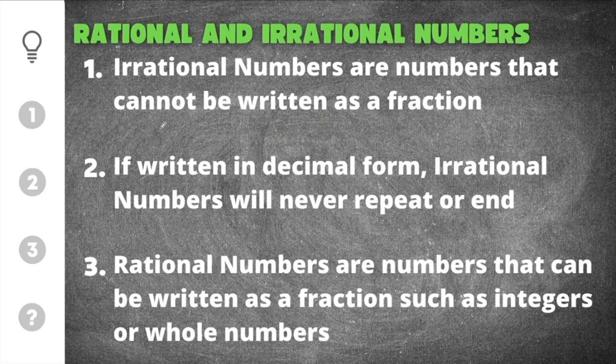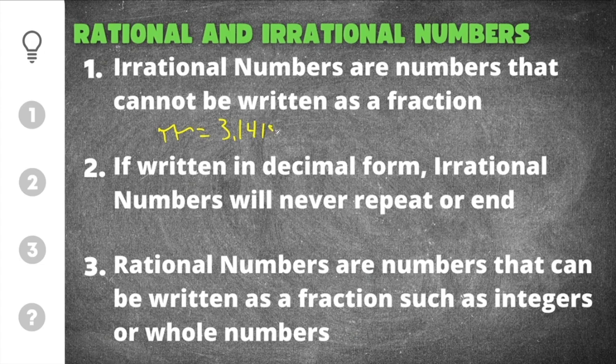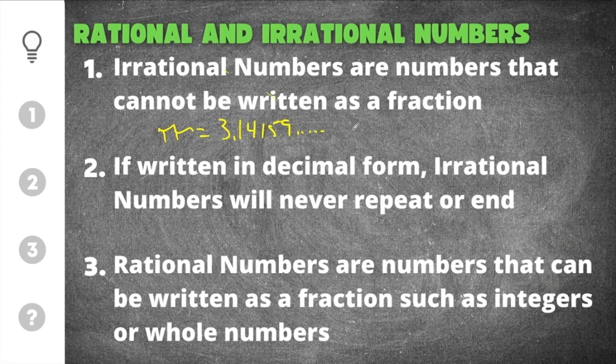Common examples of these would be like pi which is 3.14159 and it goes on forever. And many square roots are irrational numbers unless they're perfect squares.